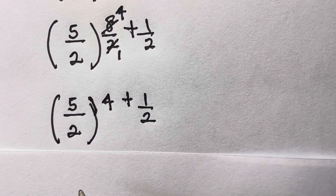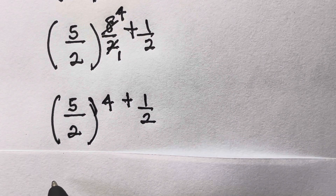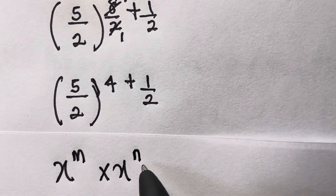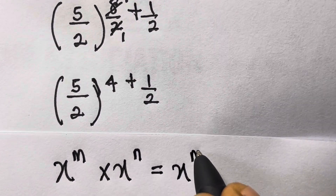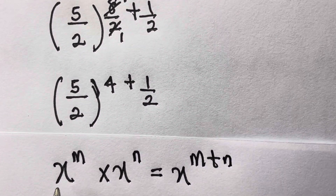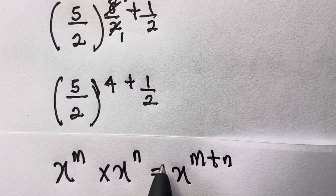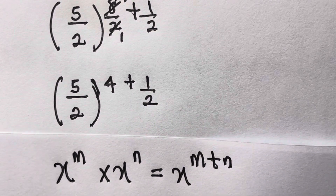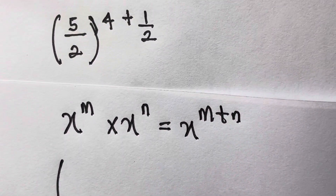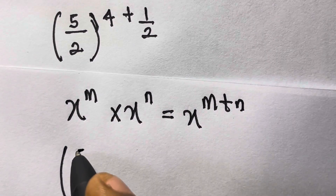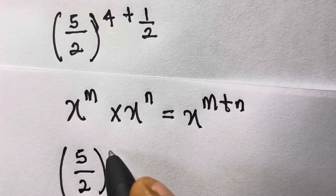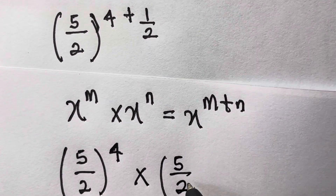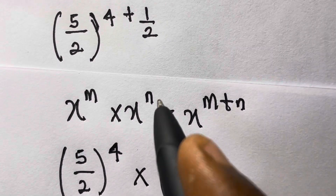Remember from the law of indices that where we have x raised to the power m times x raised to the power n, this equals x raised to the power m plus n — when numbers with the same base are multiplied, their powers are added. By applying this we have 5 divided by 2 raised to the power 4, times 5 divided by 2 raised to the power 1 over 2.